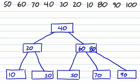The last value we insert, 100, is going to be an easy one. 100 is greater than 40, 100 is greater than 80, and 100 fits neatly into this existing node over here. And now our 2-3 tree is complete.